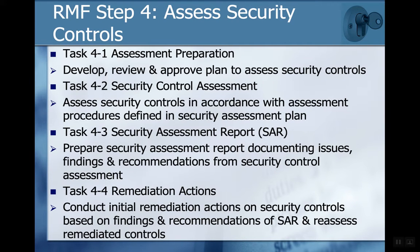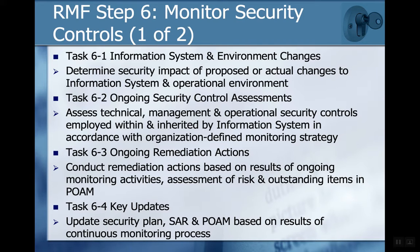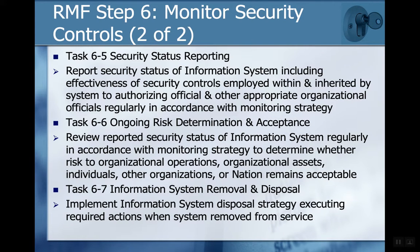Step four is the assessment — you assess the controls in accordance with the assessment procedures, prepare a report, do a review of that report, and then do remediation based on the recommendations. Step five is the information systems authorization, which is a more formalized step within the organization. And then finally, monitoring — assessing what's going on, conducting remediations, updating the plans as we go, and reporting status on an ongoing basis to the organization to support decision making.